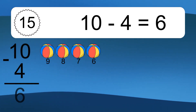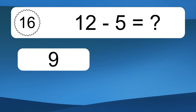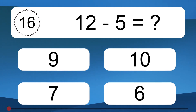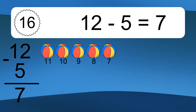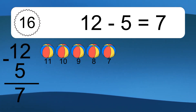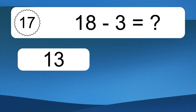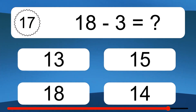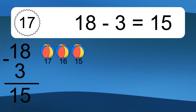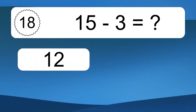10 minus 4 equals 6. Let's count it: 9, 8, 7, 6. 12 minus 5 equals what? 12 minus 5 equals 7. Let's count it: 11, 10, 9, 8, 7. 18 minus 3 equals what?